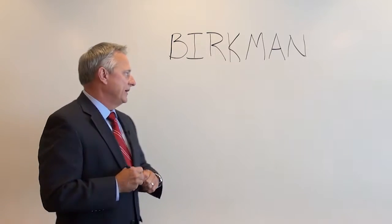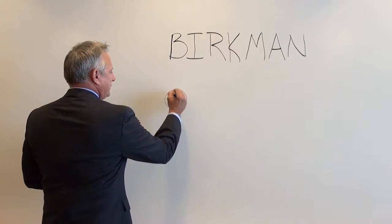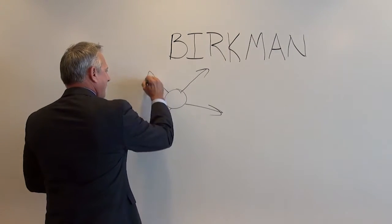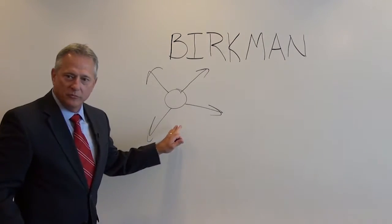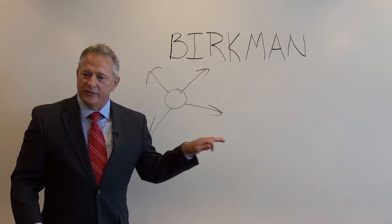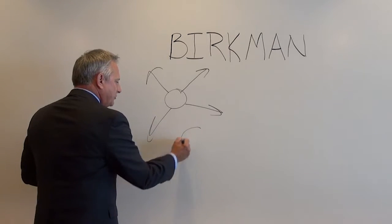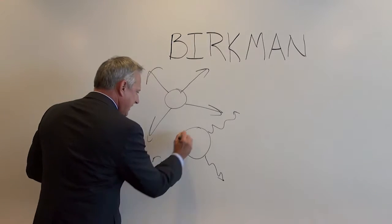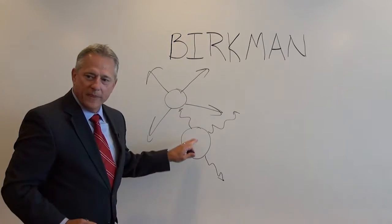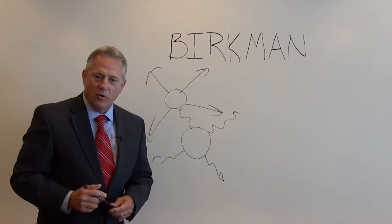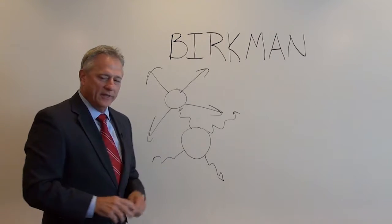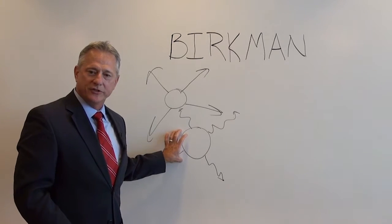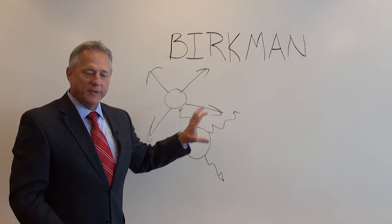So how does that look? Our usual style — if you can see — kind of looks like a picture of a productive person getting things done through people. Our stress behavior looks like this: we may be getting things done, but it's helter-skelter and we're leaving a wake of bad relationships and hurt feelings in our way. So what we want to do is stay in our usual style and stay out of our stress behavior by getting our needs met.